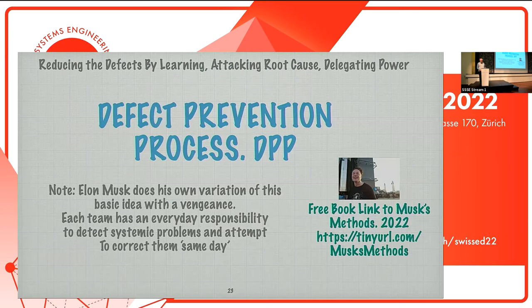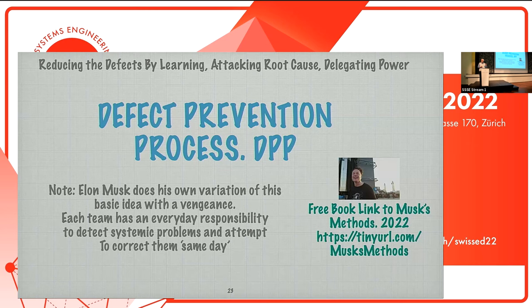The defect prevention process: we do something at the earliest stages — at least requirements and architecture, but going down into test planning and coding of software. The idea is that we find root causes of why defects occurred and we remove the root cause in the organization. For the next 1,000 times that root cause gets triggered, nothing bad happened. That's a lot smarter than removing one of the thousands and leaving 999 things to be fixed later.